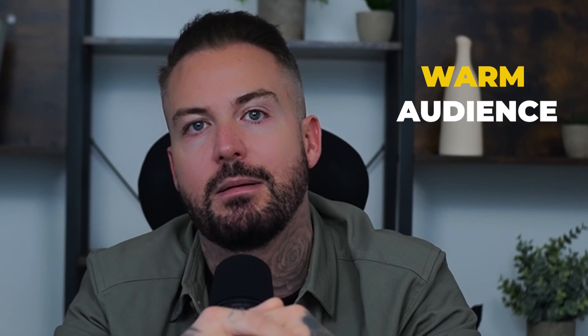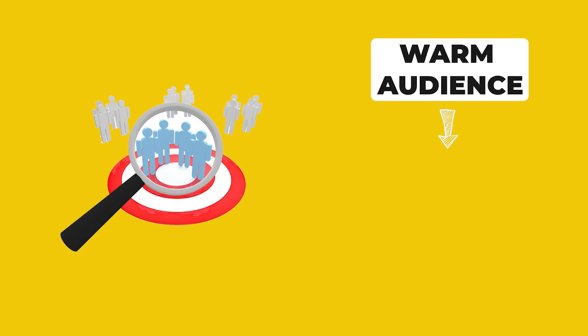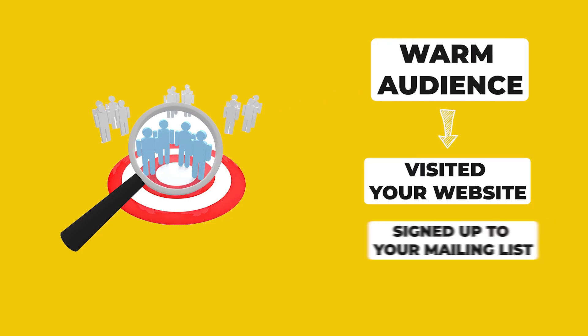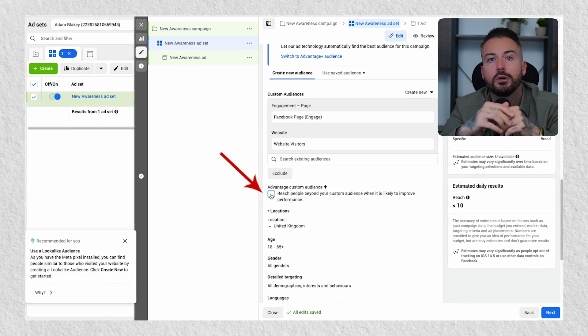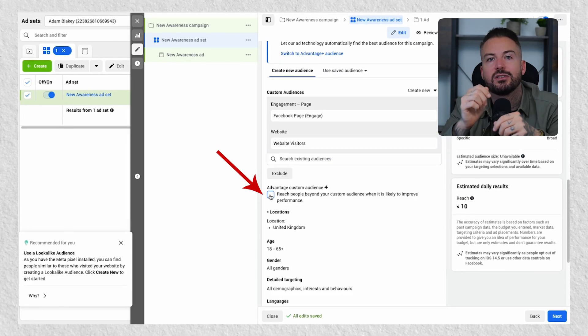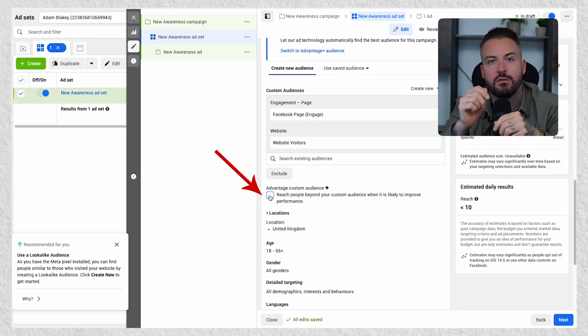Now we move on to audience. Normally you would select a warm audience to run this type of campaign, however it can work just as well with a cold audience. A warm audience will be targeting users that, for example, visited your website, signed up to your mailing list or watched a video. If you're using a warm audience you want to make sure Advantage Custom Audience Plus is turned off, as this will put your ads in front of people that are not warm — defeating the point. You can leave all other targeting options pretty broad as your audience is specified by the custom audience selected, for example your website visitors.